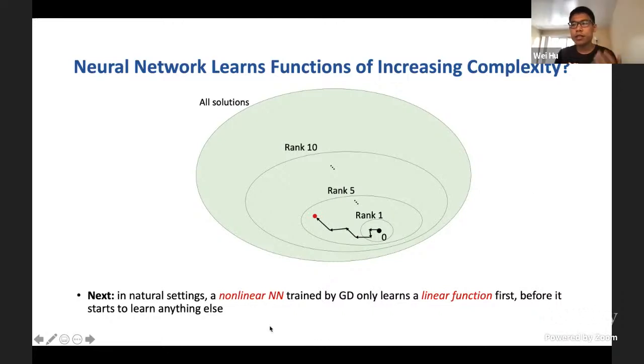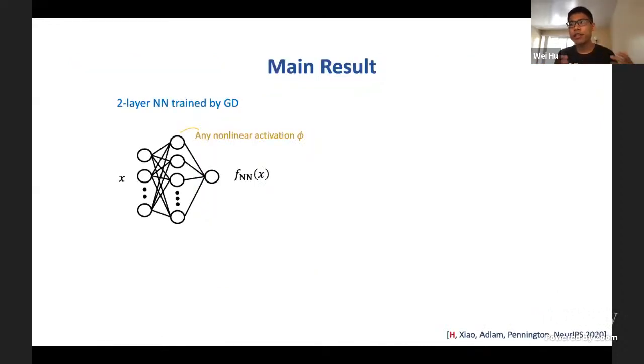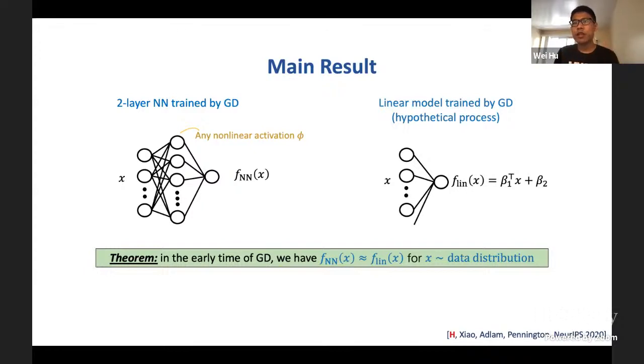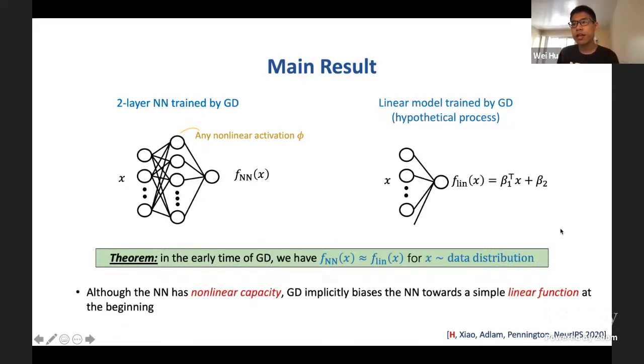Next I'm going to very briefly talk about another interesting theoretical result along the lines of this general hypothesis. In particular, we will show that in some natural settings, a non-linear network trained by gradient descent only learns a linear function first before it starts to learn anything else. The formal result is for a standard two-layer neural network trained by gradient descent. The network looks like this. It has two layers, and there's non-linearity in the hidden layer of the network. We also consider a hypothetical process, which is a linear model, also trained by gradient descent. So it's just a simple linear model on the input x. The beta 1 and beta 2 here are the parameters in this linear model. What we prove is that these two processes can be coupled. Specifically, in the early time of running gradient descent, the neural network and the linear model compute almost the same function for input x coming from the underlying data distribution. So that means, although the neural network has non-linear capacity, but when we are running gradient descent, it will implicitly bias the neural network towards a simple linear function at the beginning of training. So this is also a very interesting implicit regularization effect.